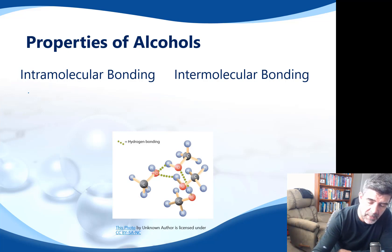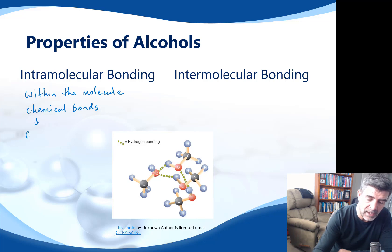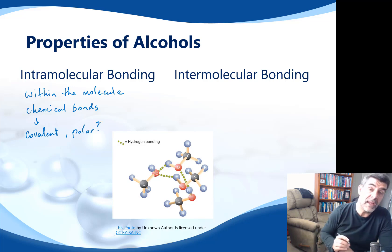Intramolecular bonding is what happens within the molecule. Most of the time, what we're looking at here are the chemical bonds — meaning that we're looking specifically at things like the fact that they will be covalent, and they may or may not be polar. That's going to have an effect on not just their chemical properties, but potentially also their physical properties.